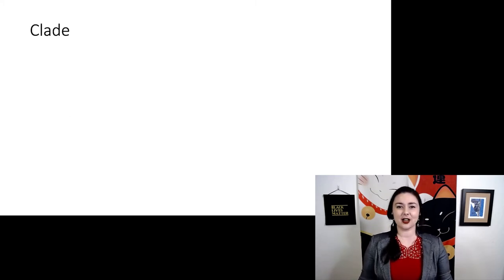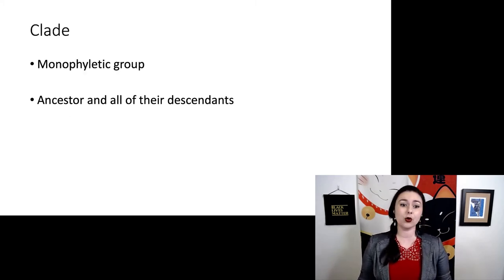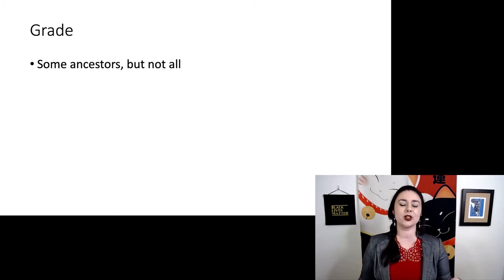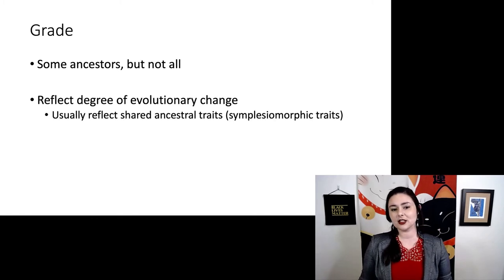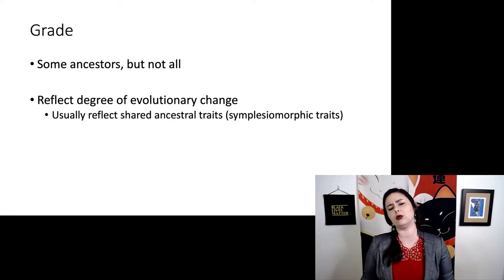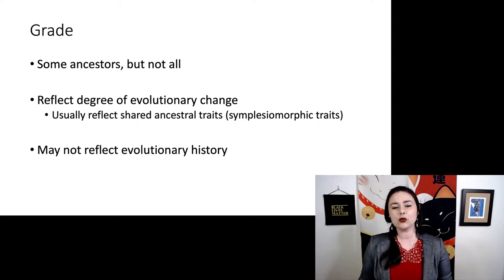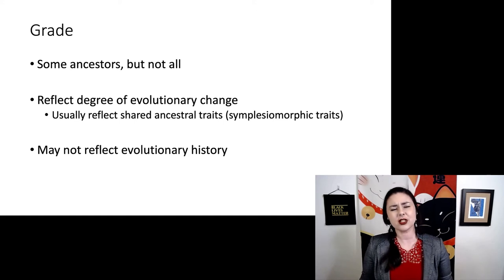We've already talked about clades. A clade means a monophyletic group — an ancestor and all of their descendants. Grades are a little bit different. We are grouping organisms with some of the ancestors, but not all of them. Instead, we use a completely different criteria: grades reflect the degree of evolutionary change — how new or old something is. Usually, grades reflect shared ancestral traits, or plesiomorphies, and they don't really reflect evolutionary history. It's a little hard to understand just with words, so let's look at some examples.